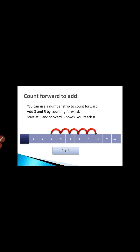Here, add 3 and 5 by counting forward. Start at 3 and move forward 5 boxes. You reach 8. We start from 3 and take 5 jumps of single steps. We reach 8. This shows that 3 plus 5 equals 8. In this way we can also do addition.